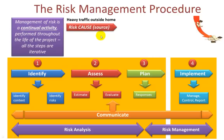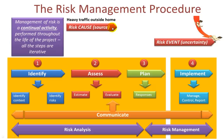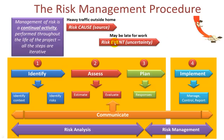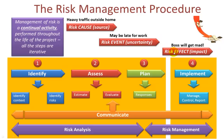One of the main problems with risk management is actually identifying risks correctly. The way to get this right is to remember that there are three steps. First, you have the risk cause or source of the risk — let's say heavy traffic outside your home. Then the risk event itself, the uncertainty: due to heavy traffic, you may be late for work. And finally the risk effect or impact: the boss will get mad. If you think about risks in this way, you'll be a much more effective manager of risks.